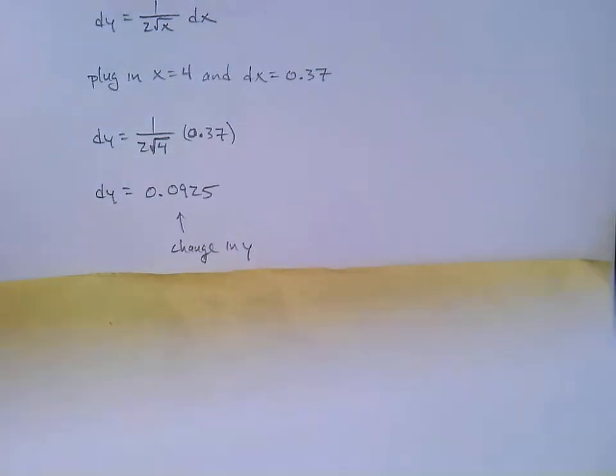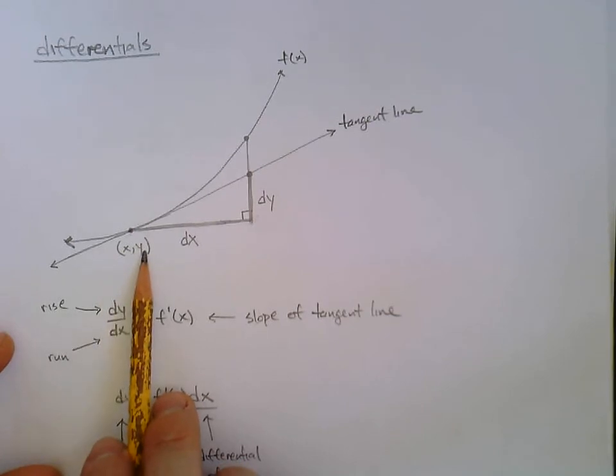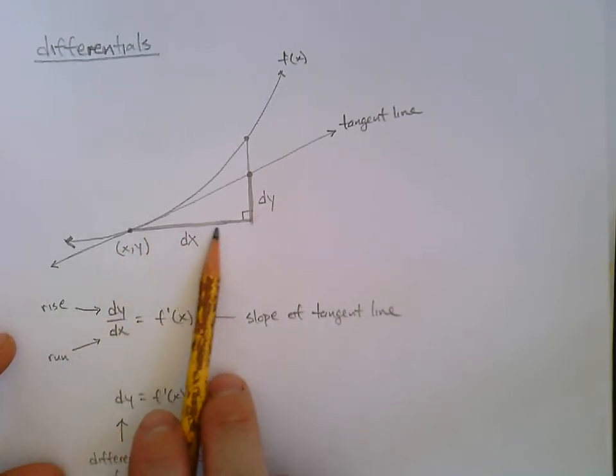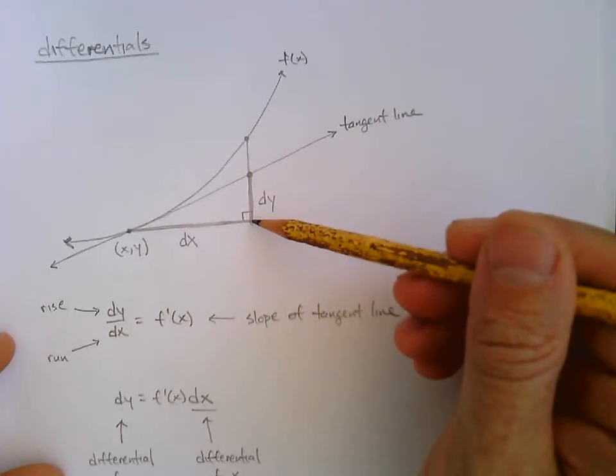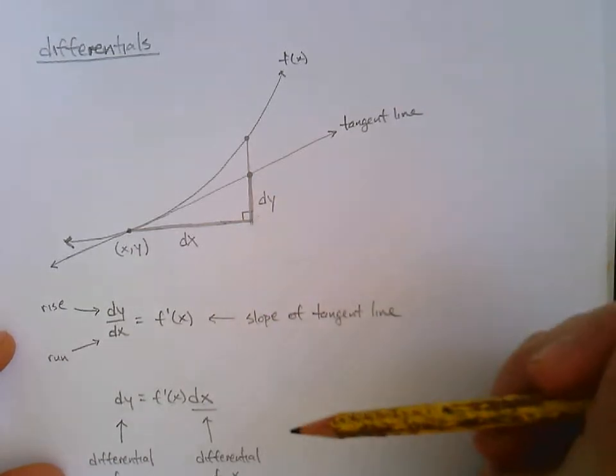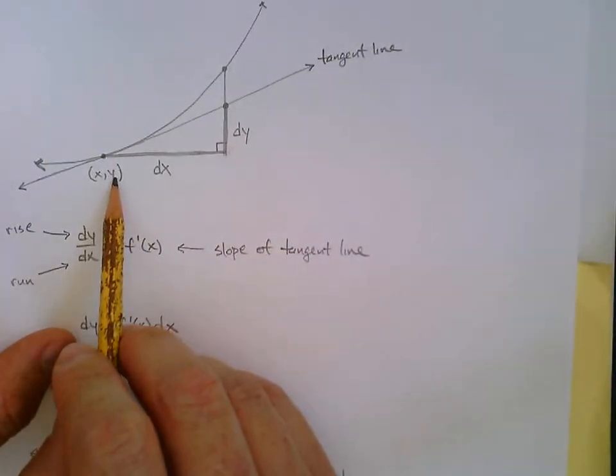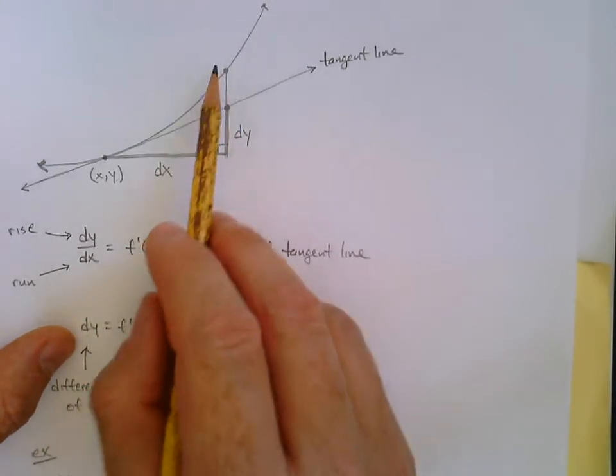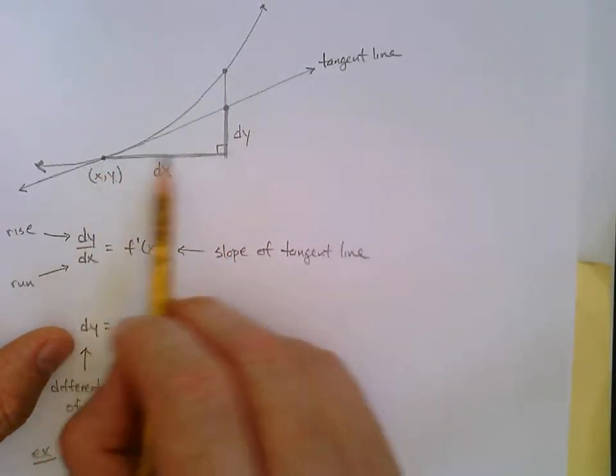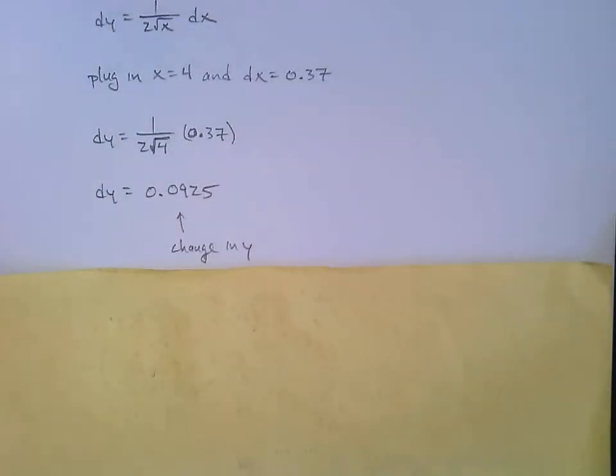Let's go back to the drawing. So we started at 4, 2. Then we changed 0.37 in the x, and we changed 0.0925 in the y. But we don't have our answer yet. Why not? Because all we know is the change. What was the original y? That needs to be added on. So we can get the approximation there. We don't just want the change. We need to know the change from what? Where was it originally?